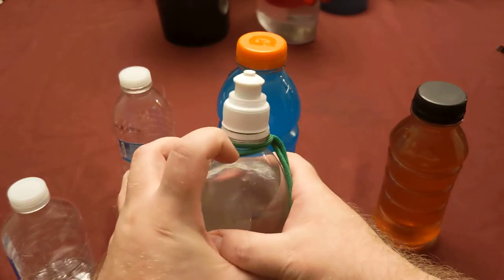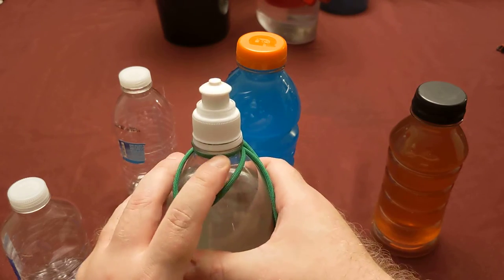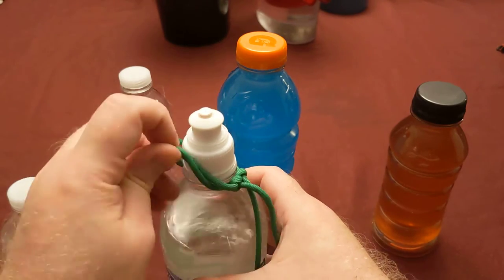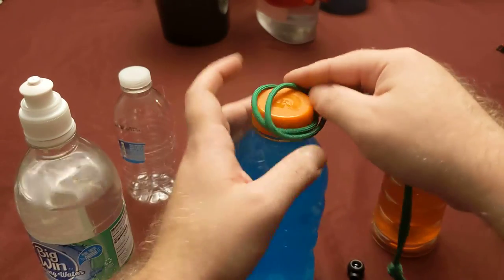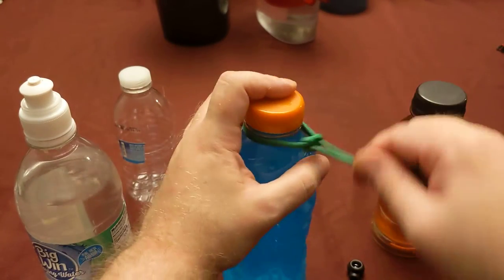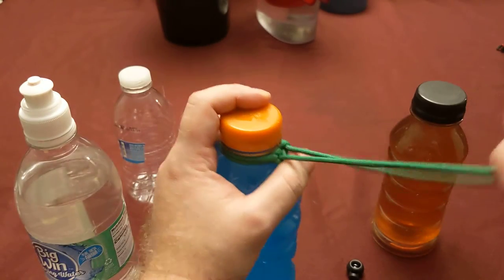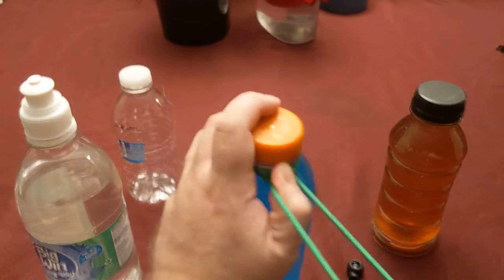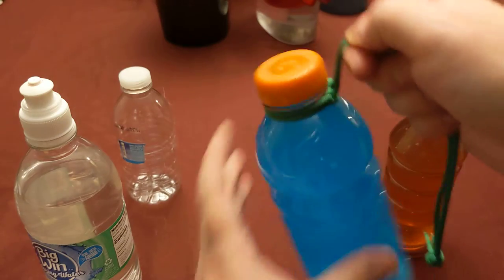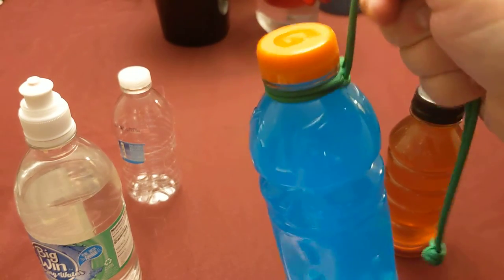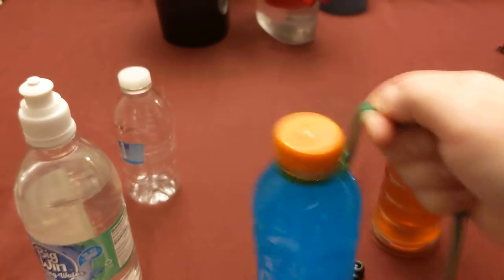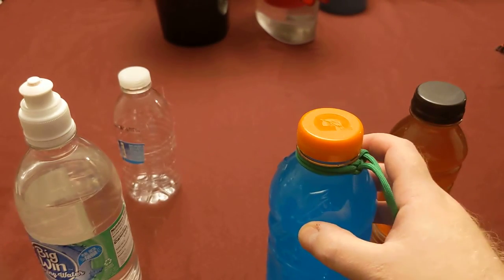To undo it, you just grab and pull. Comes off. You can use the same thing on a larger bottle. Tighten it up. Pull both strings to tighten both loops around the neck of the bottle. And the weight of the bottle pulls it tight, keeps it tight. It'll work on just about anything.